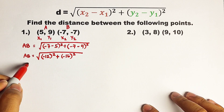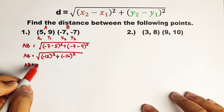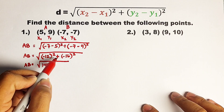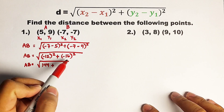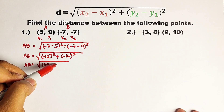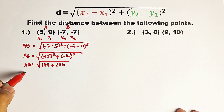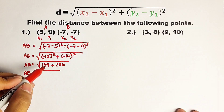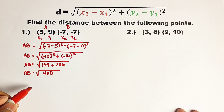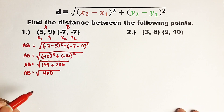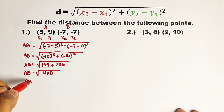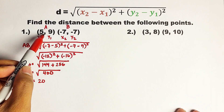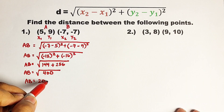Simplifying negative 12 raised to the second power gives 144, plus negative 16 raised to the second power gives 256. Adding those numbers, 144 plus 256, that is the square root of 400. And the square root of 400 is 20. Meaning, the distance between point A and point B is simply 20 units.